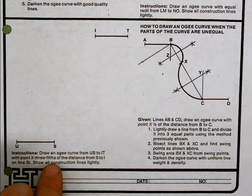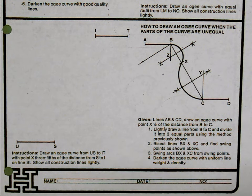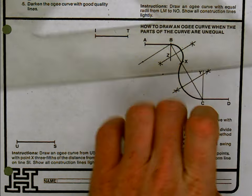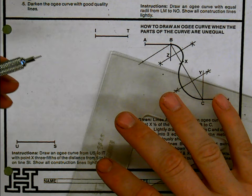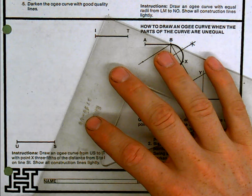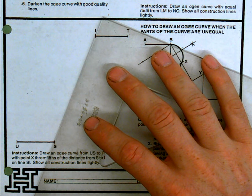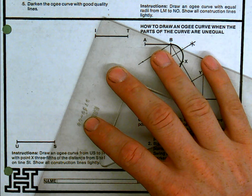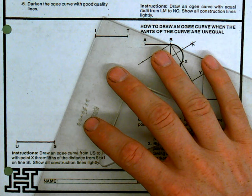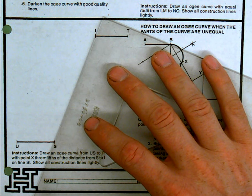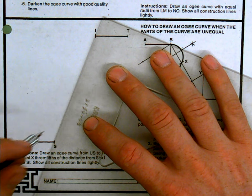Now since I'm dealing with fifths, what I'll probably want to do is use that other method of dividing the line into any number of equal parts. So let me first start by drawing that line, and of course I'm going to extend it beyond its points S and I, just so I have some additional length to reference to with the triangle.